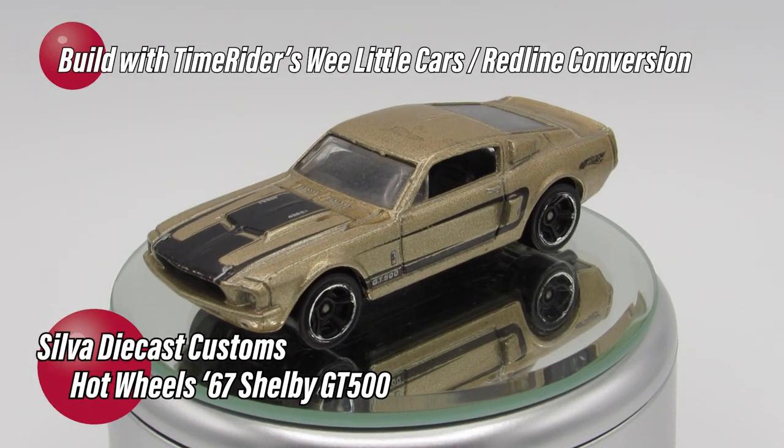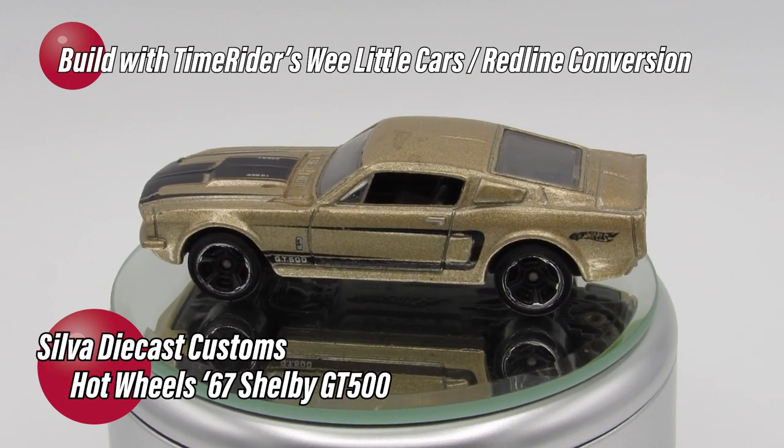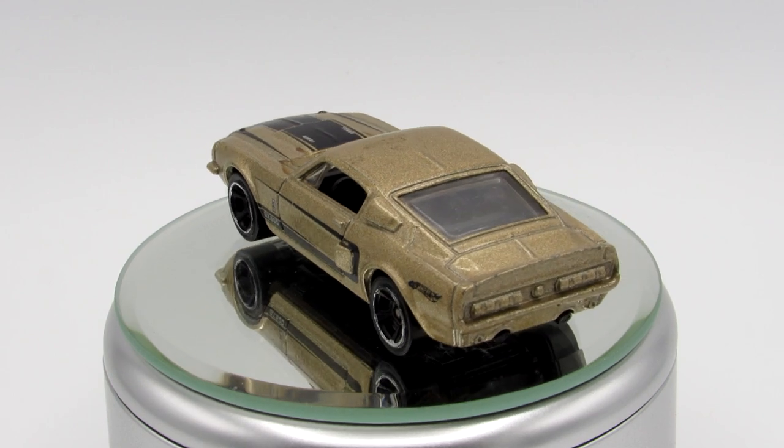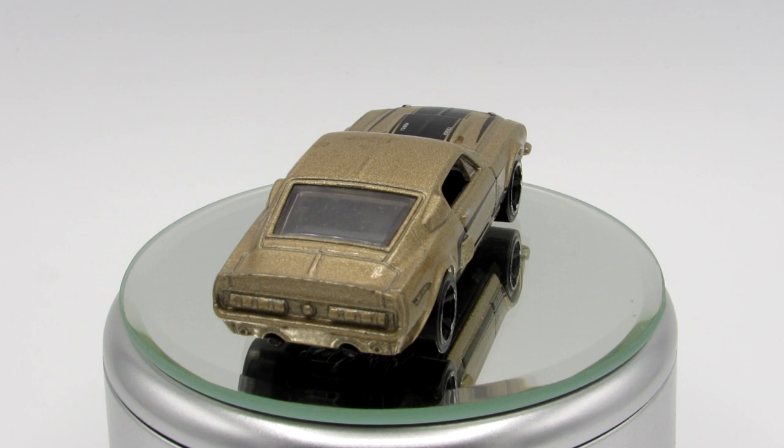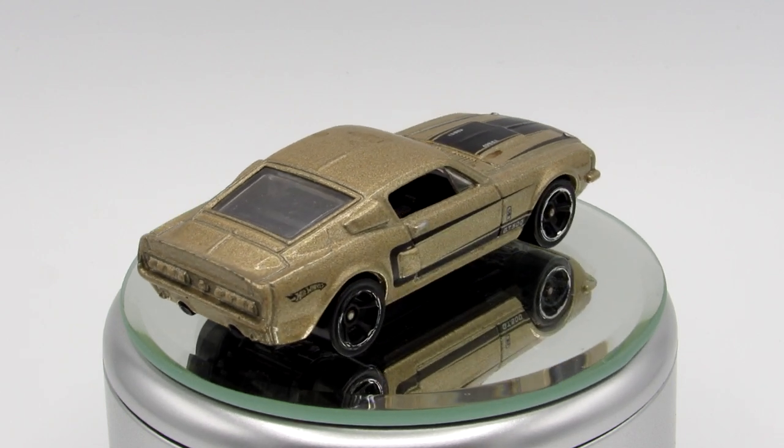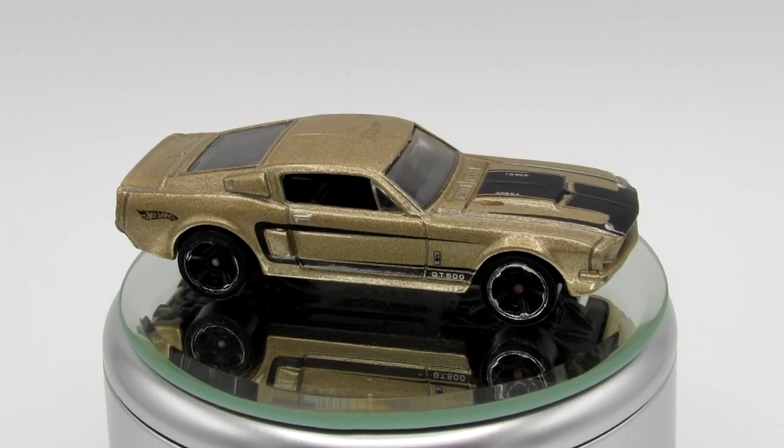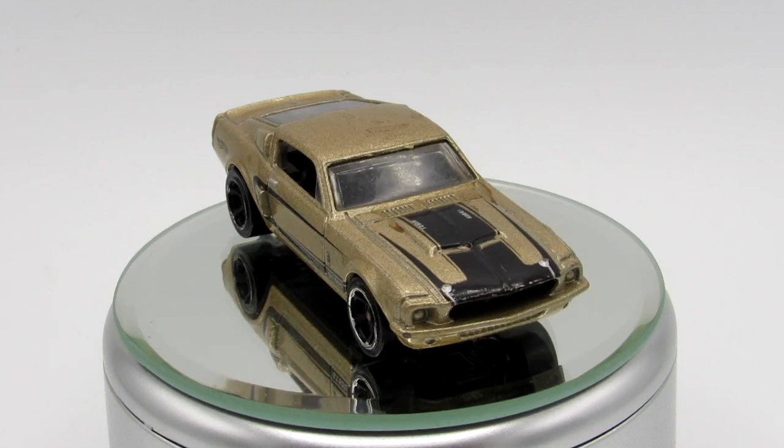Lee over at TimeRider's Wee Little Cars sent me this Hot Wheel 67 Shelby GT500 casting. The plan is we're both going to do Mustangs, polish them up, and convert them to red lines. Naturally, I jumped at the chance because I love doing that, and Lee's a master of doing these things, so there's no way I could pass up this opportunity.